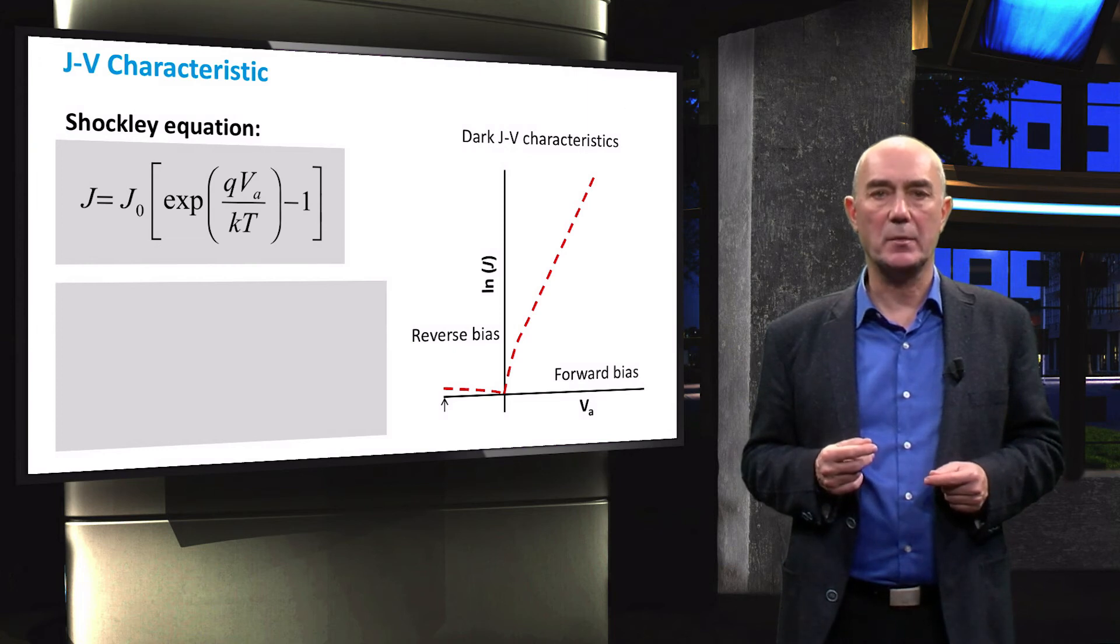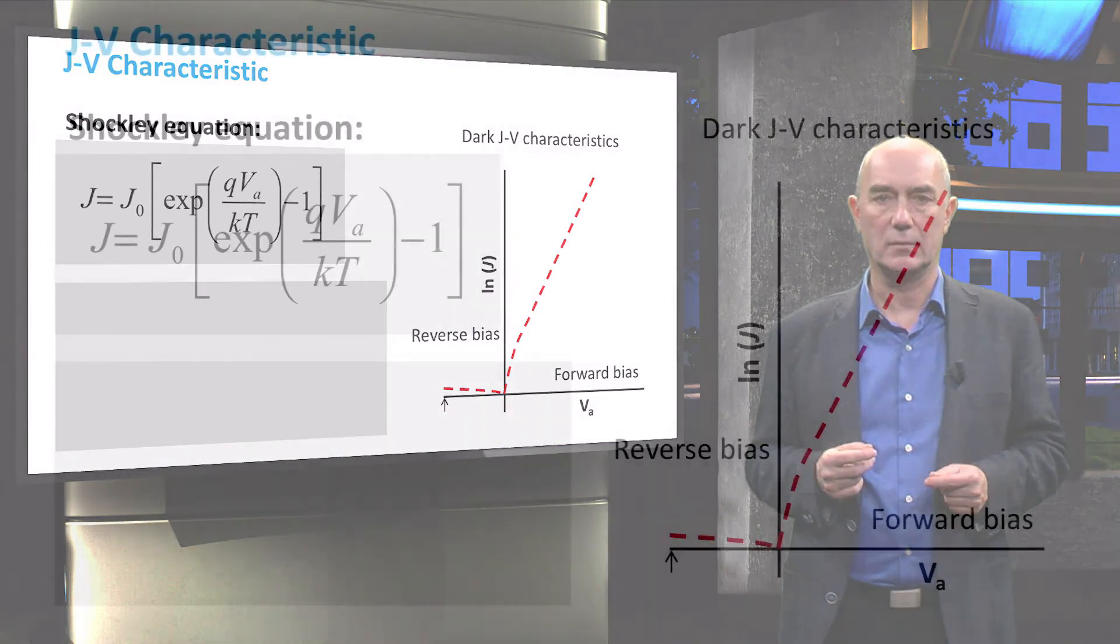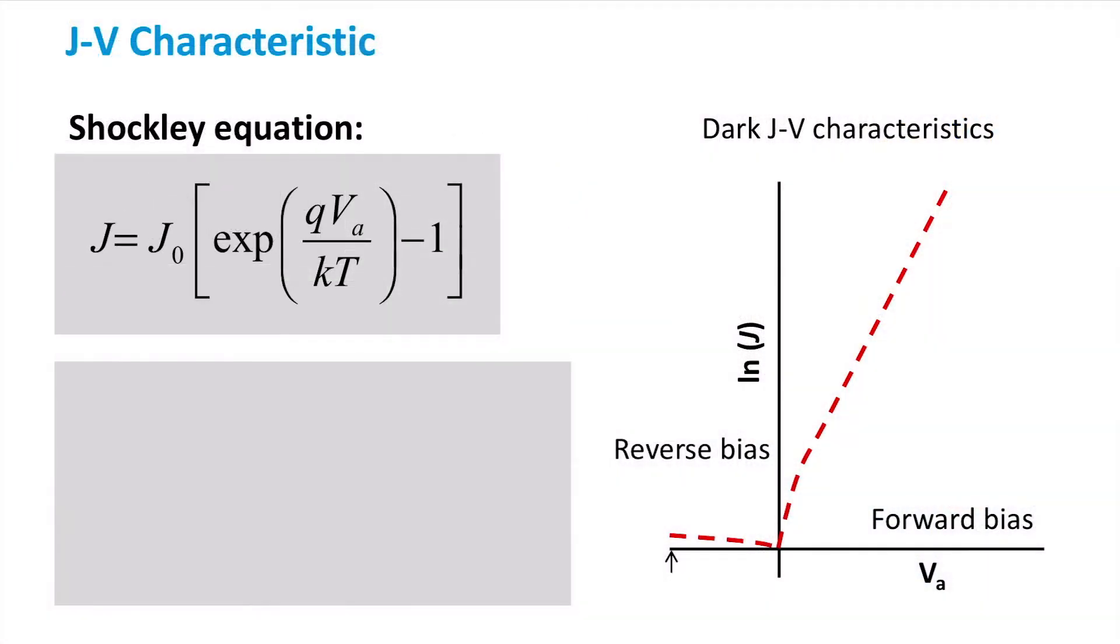Let's take a look at some consequences of this equation. We can see that if the applied voltage is zero, it means Va is zero, the exponential term will reduce to one, resulting in a current density J of zero. No net current flows through a diode.